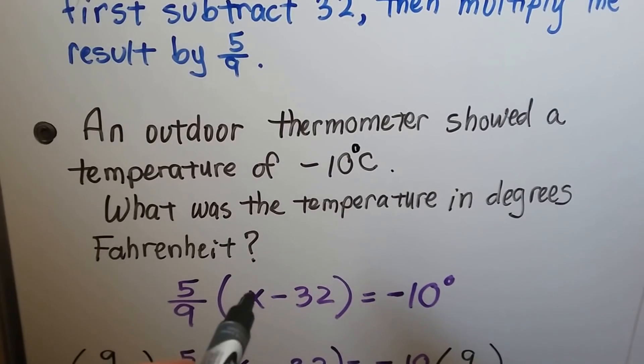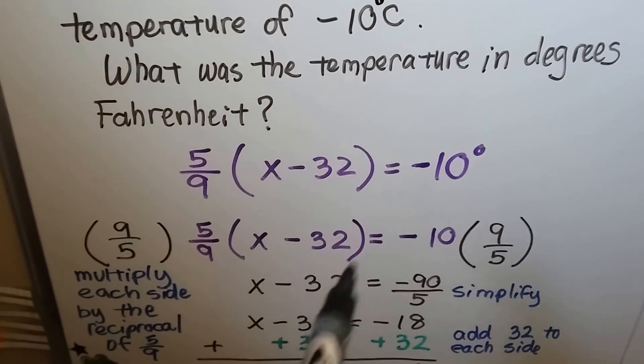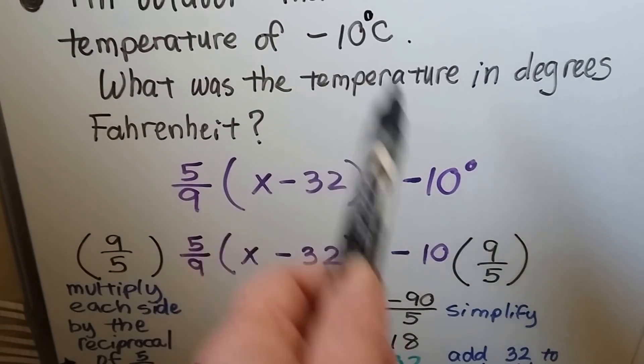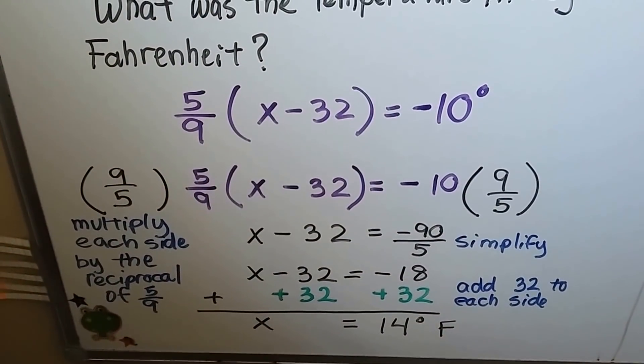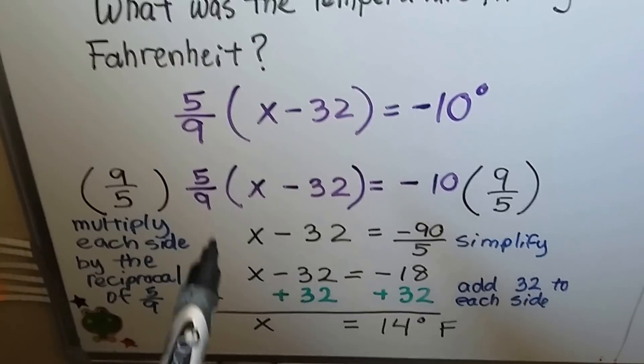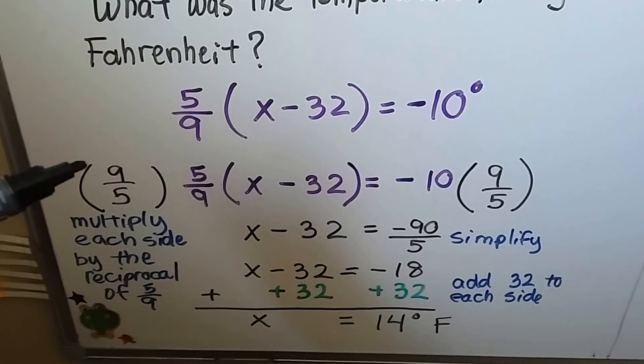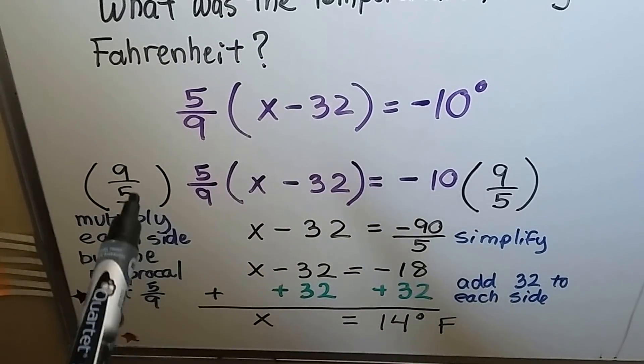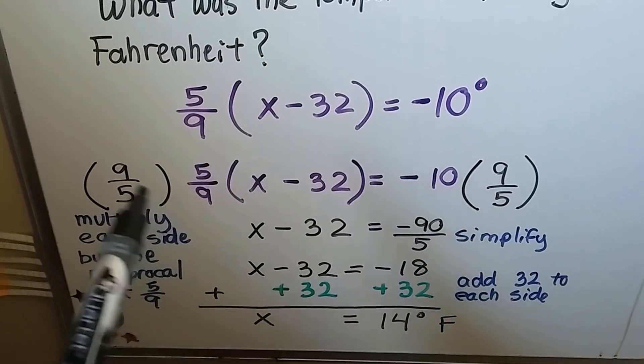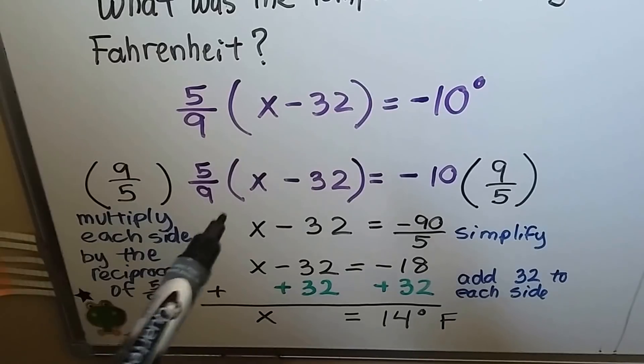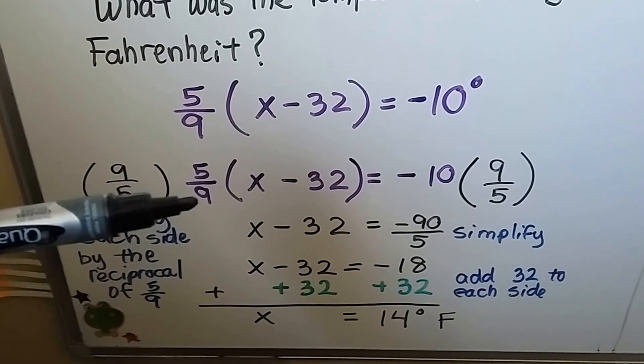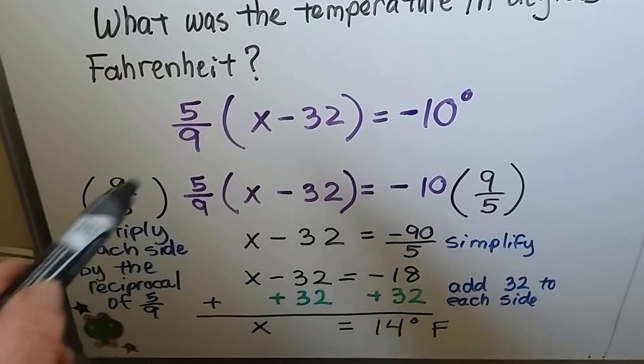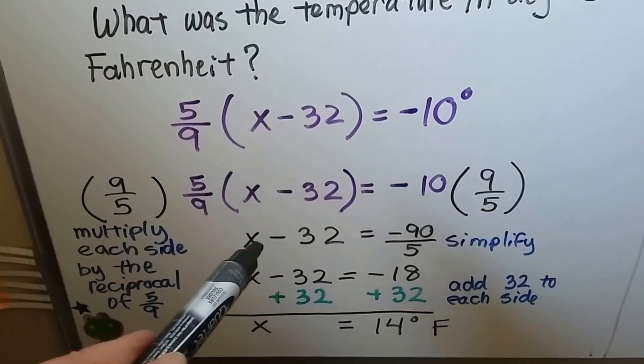We need to find x. Because this is the formula to find Celsius, that's why the negative 10 degrees is there. We can use inverse operations, and because there's a fraction here, we can multiply each side of this equation by the reciprocal of 5 ninths as 9 fifths. We multiply this side by the 9 fifths, and this side by the 9 fifths. That's eliminated because it's just a 1, and 1 times a number is that number.